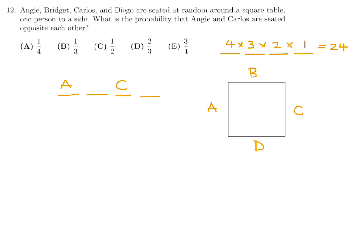Writing it out in a flat way, Bridgett is here and Diego is there. Since this is fixed and that is fixed, there are only two choices for that seat and one remaining choice — giving 2×1 = 2 possible arrangements for this configuration.